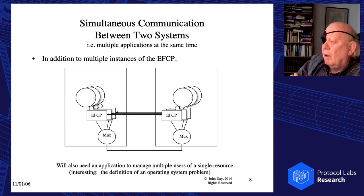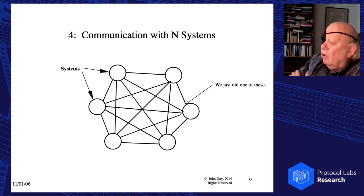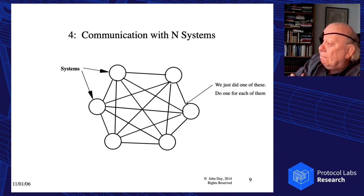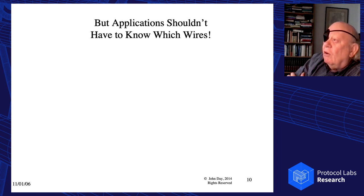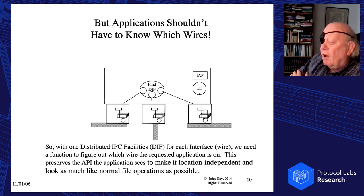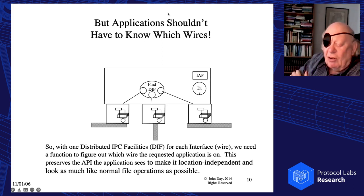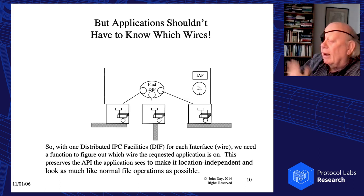Then we go to systems directly connected. We just did one of those, so let's do one for each wire. But the application really shouldn't have to figure out which wire the application it wants to talk to is on. So we need to posit some kind of finder — when you request a destination application, it figures out which wire it's on and reports back. We know that's just not going to scale. So let's posit machines that are only needed for relaying — one of our already-created things for each wire, and then a little application that does relaying.